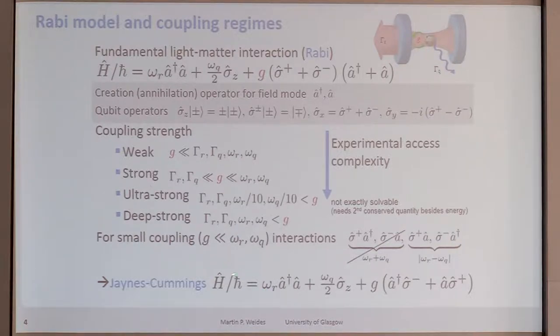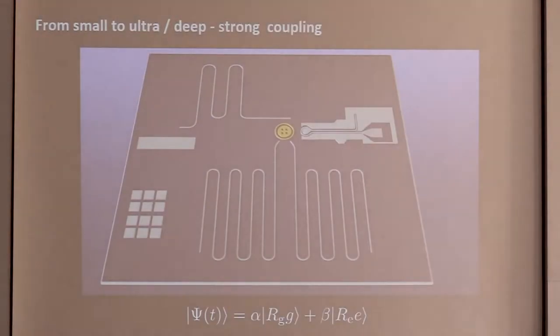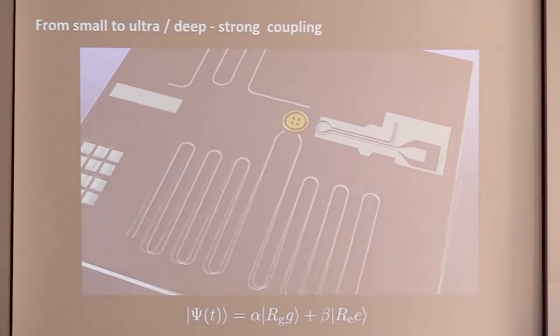And deep-strong coupling means the coupling strength is a dominating energy. These ultra- or deep-strong coupled systems are not exactly solvable, at least not for the dynamic case. But for most experiments, it is because the experimental situation would be strong coupling, and then it can be simplified to the Jaynes-Cummings Hamiltonian, which is also a typical situation for superconducting quantum circuits, which are typically strongly coupled.